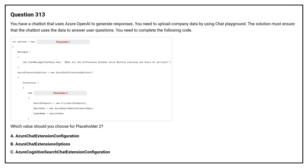Question number 313. You have a chatbot that uses Azure OpenAI to generate responses. You need to upload company data by using Chat Playground. The solution must ensure that the chatbot uses the data to answer user questions. You need to complete the following code. Which value should you choose for placeholder 2? Option A: Azure Chat Extension Configuration. Option B: Azure Chat Extension Options. Option C: Azure Cognitive Search Chat Extension Configuration.